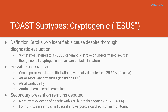Secondary prevention of cryptogenic stroke is a hotly debated topic. As of now, there's no good evidence for anticoagulation, though several trials are ongoing — including one called ARCADIA you may see at UC. In the meantime, we treat these patients as if it were small vessel disease, placing them on weight-based aspirin and high-intensity statin. Most importantly, you have to rule out covert AFib — that's by far the most common cause — so we arrange outpatient cardiac rhythm monitoring.